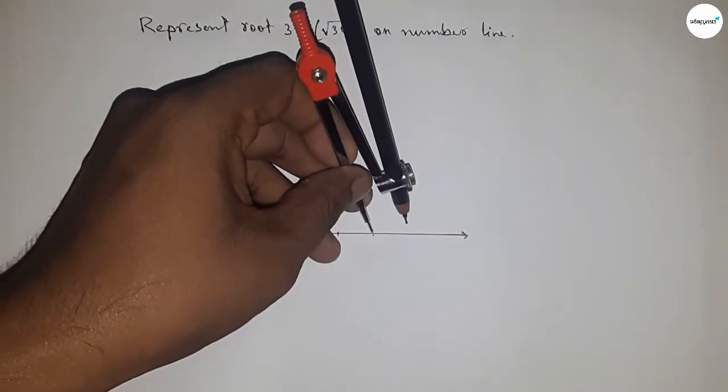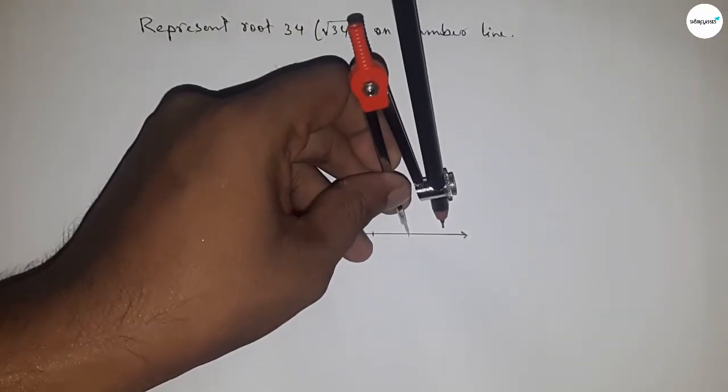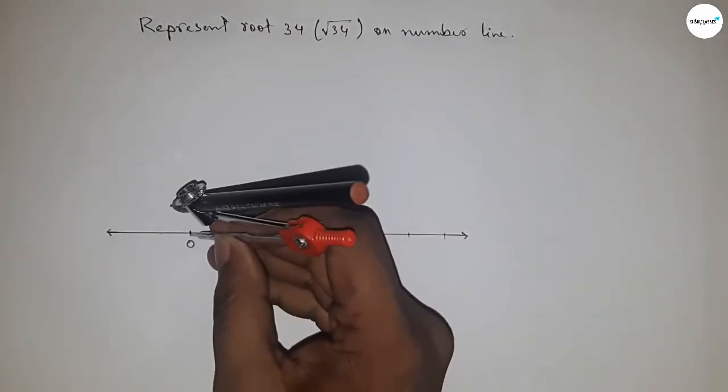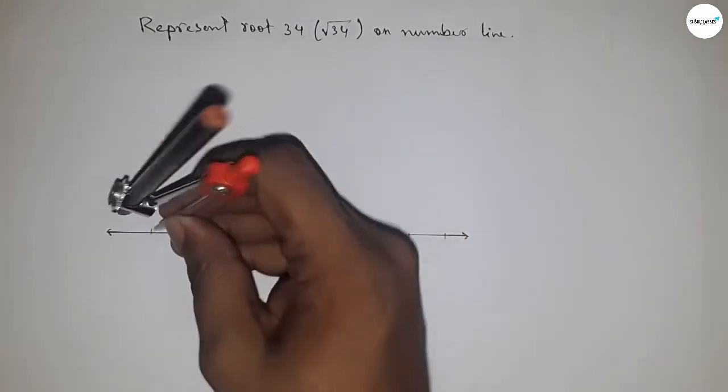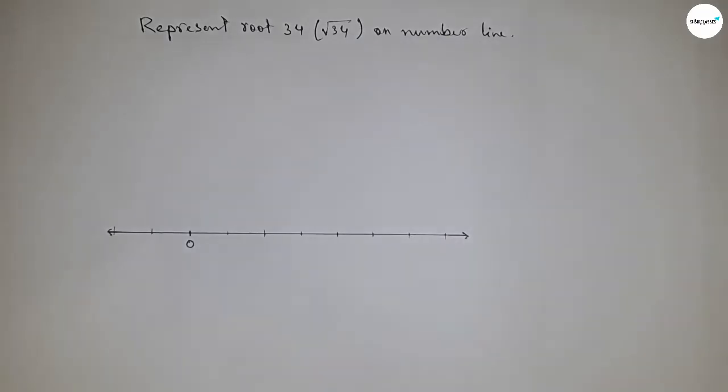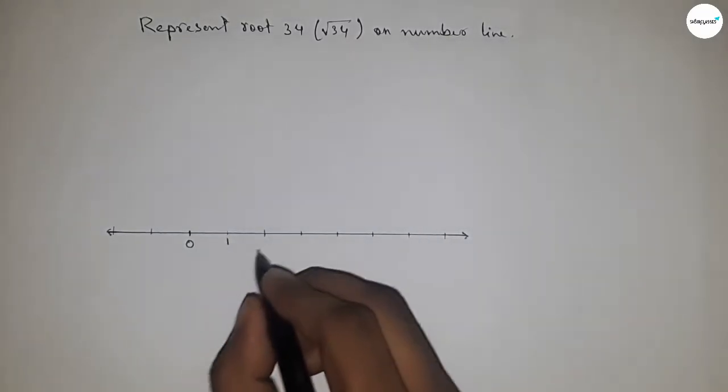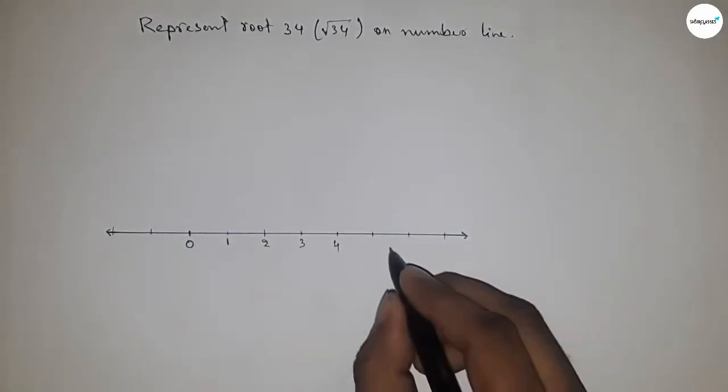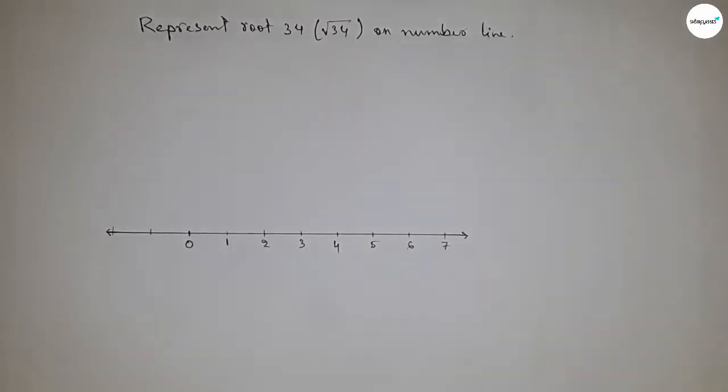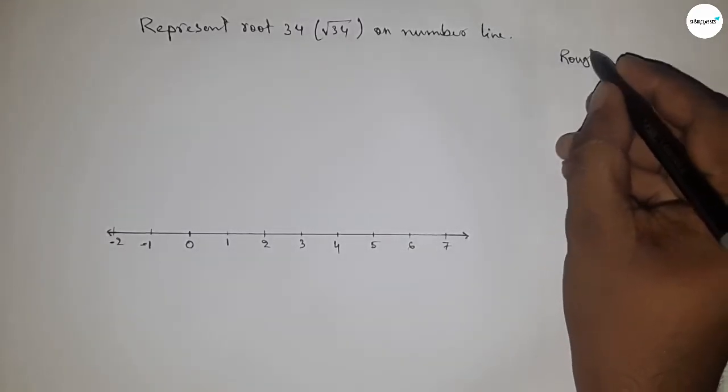You can choose another length. So this is one, two, three, four, five, six, seven so on, and this side minus one, minus two and so on. Now roughly discussing the concept of root 34.